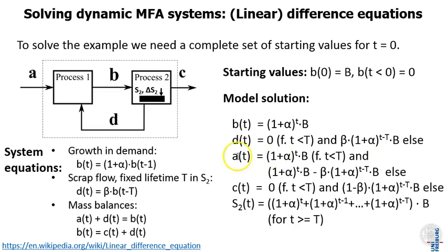From b we can get d via the defining equation, it's just the flow b from t capital T years earlier. We can use the mass balance of process one to calculate the inflow a, we can use the mass balance of process two to calculate the outflow c, and from the mass balance we also get the stock, which is the sum of the inflows b of the last capital T years. This is just a consequence of the simple lifetime model we have.